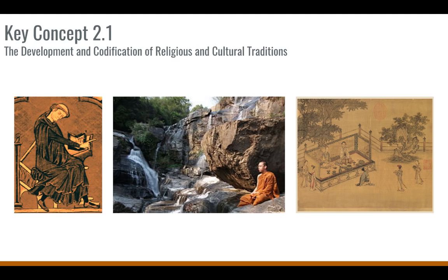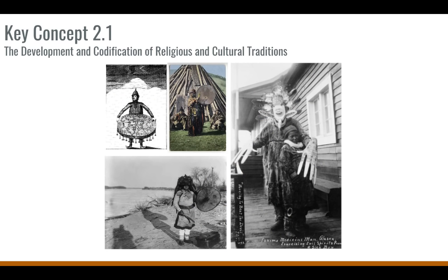Belief systems generally reinforce existing social structures while also offering new roles and status to some men and women. For example, Confucianism emphasized filial piety. Some Buddhists and Christians practiced monastic life. Other religions and cultural traditions — including shamanism, animism, and ancestor veneration — continue in this time period. We still have groups that practice animism and shamanism even beyond this time period. For example, the Mongols had shamanist practices, and ancestor veneration persists especially in China.